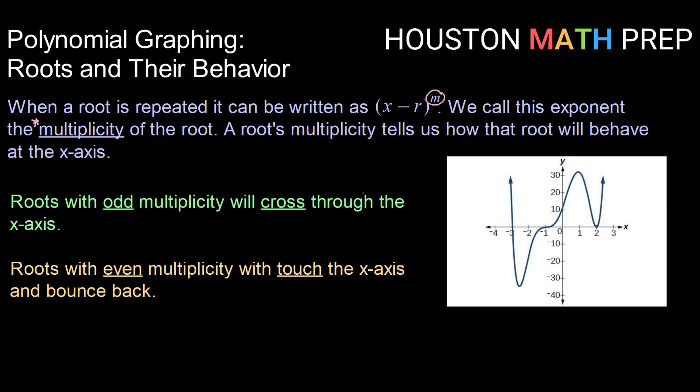For polynomial roots, there are two ways that a root can behave. If the multiplicity is odd, we will see that the root or the graph crosses through the x-axis at that point.